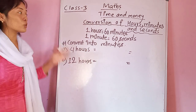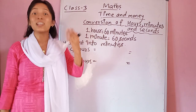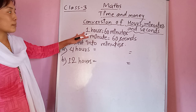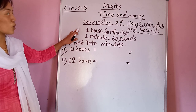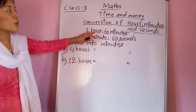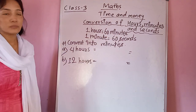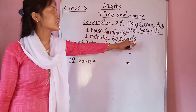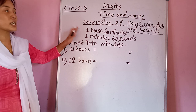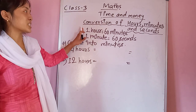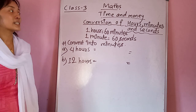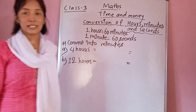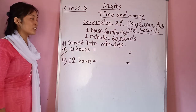Before converting hours into minutes and minutes into seconds, you must know the relation between hours, minutes, and seconds. The relation is written on the board — look here carefully: one hour equals 60 minutes, and one minute equals 60 seconds. You must know this fact.